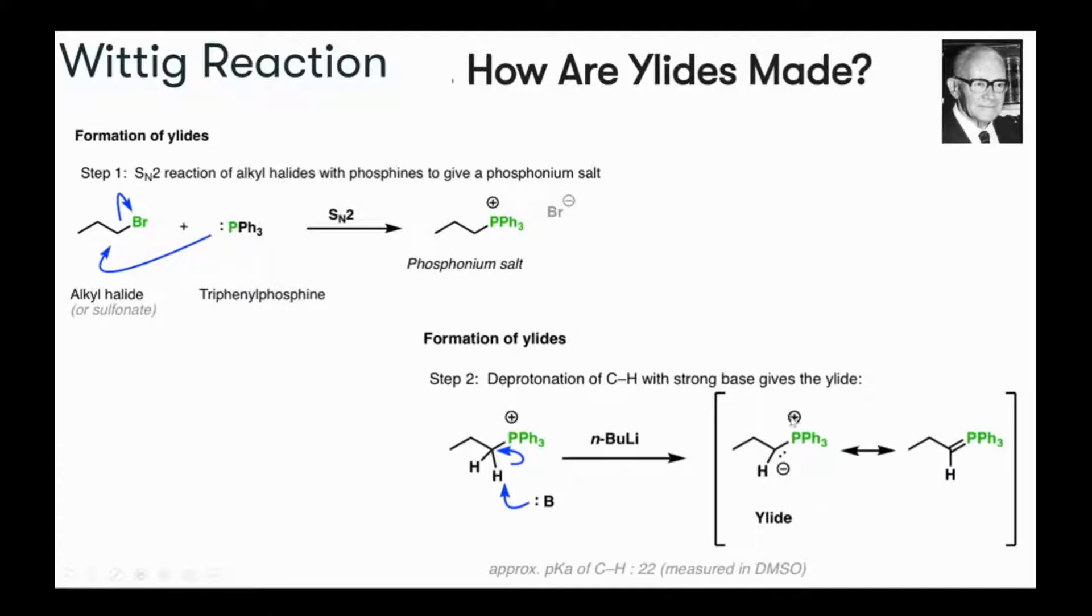Now you have a positive and a negative charge in the same system. That's why we are calling it ylide. So if you closely look at this, we have a positive charge at the phosphorus and a negative charge at the carbon atom. This is resonance stabilized, so this negative charge can move.